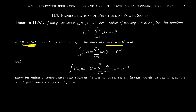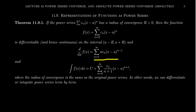We cannot guarantee differentiability at the endpoints of the interval, but on the open interval (a minus r) to (a plus r) we can always guarantee differentiability. The derivative of f, where f was defined as a power series, will look like the sum from n equals one to infinity of n times c_n times (x minus a) to the (n minus 1).